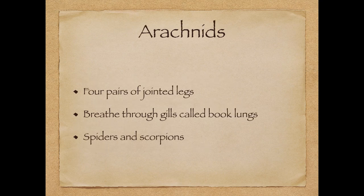Next is class arachnids. These include scorpions, spiders, and ticks. They are identified by having only four pairs of jointed legs. They breathe through structures called book lungs — these are different from the gills of crustaceans because most arachnids live on land. They sometimes also have hair around their body.